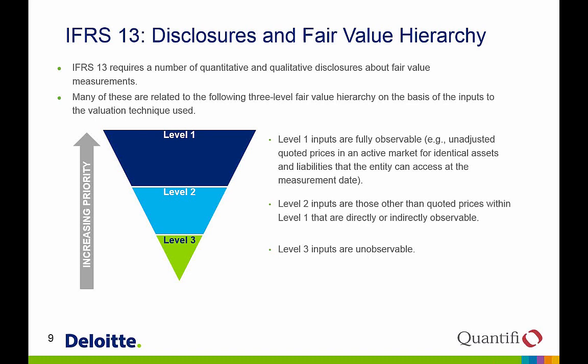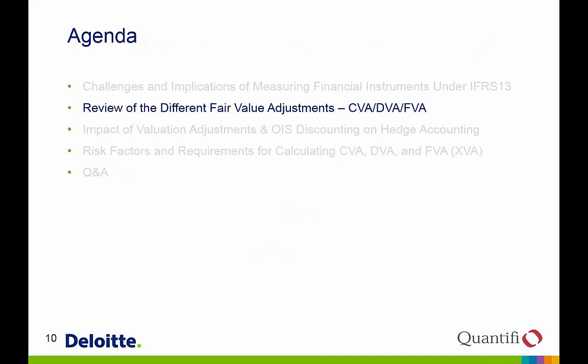One method IFRS 13 uses to achieve transparency and comparability is the fair value hierarchy, requiring banks to classify inputs as Level 1, 2, or 3. Level 1 inputs are fully observable in an active market for identical assets — for example, an actively traded share price. Level 2 inputs are quoted but may not be within an active market, and include yield curves and implied volatilities. Level 3 inputs are truly unobservable, often calibrated variables or variables taken from historical experience.